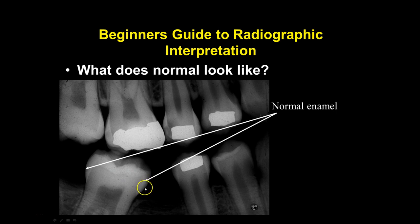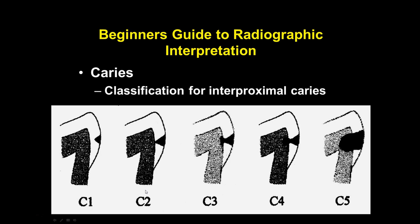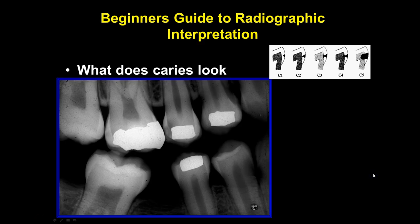Normal enamel anatomy includes the enamel layer, the DEJ, the CEJ, and the pulp chamber. Let's talk about the different classifications of caries, which is very significant for determining levels of needed care. You have class 1 through 5. Lesions start isolated in the enamel — what we call incipient lesions — then progress just at the DEJ, just breaking through, well into the DEJ, and almost to the pulp horn or pulp chamber, which can be very detrimental.